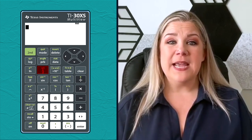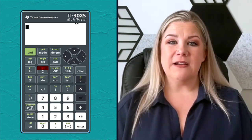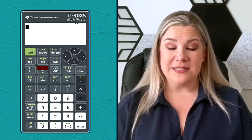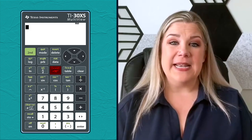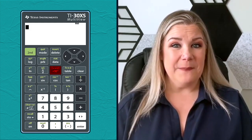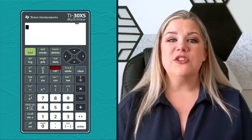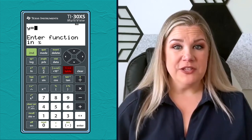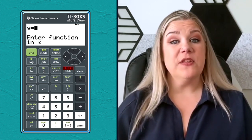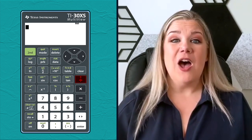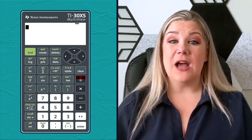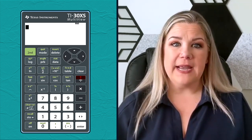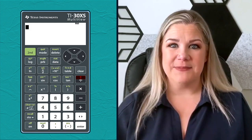The n-over-d button is used to input fractions. Its secondary function, un-over-d, toggles between improper fractions and mixed numbers. The x10 to the power of n key is used to enter scientific notation quickly, and its secondary function toggles between a fraction and its decimal equivalent. Next is the table key, useful for generating function tables, with a secondary function that helps with converting between fractions and decimals. Above the division key, there's k — a constant operator that lets you repeatedly apply the same operation to different numbers without re-entering it each time. Big time saver.